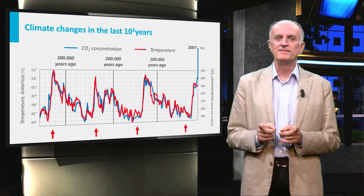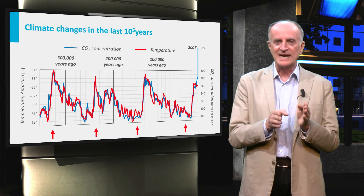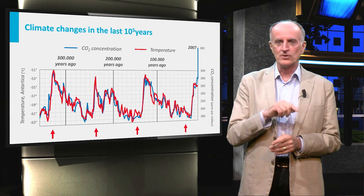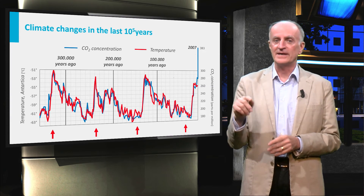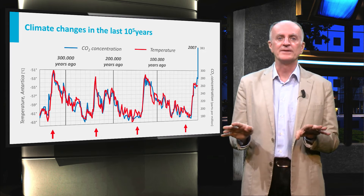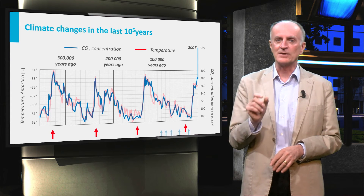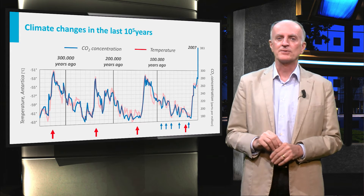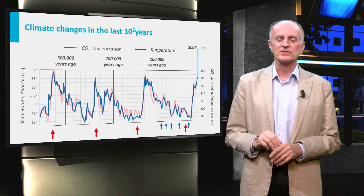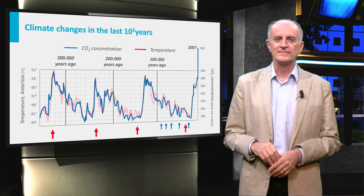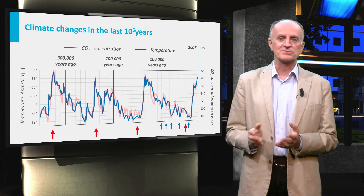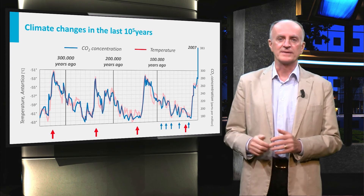A striking feature of the curve is the cyclic pattern. This means that temperatures oscillate with a recurring time length and not in a random manner. A very clear wavelength is indicated by red arrows and corresponds to a duration of about 100,000 years. Shorter wavelengths are also visible, such as the one marked by the blue arrows, which is roughly 20,000 years.